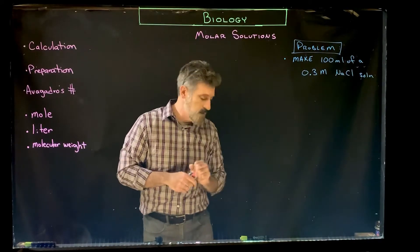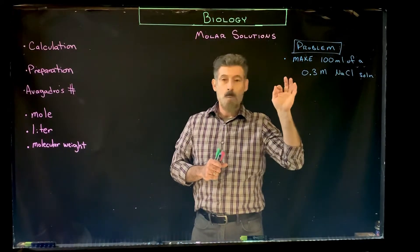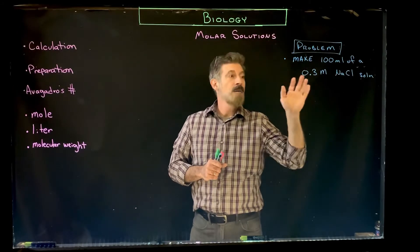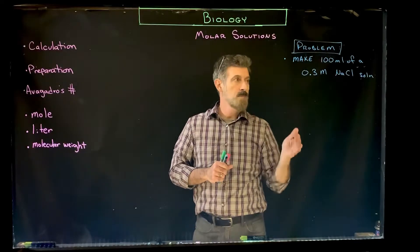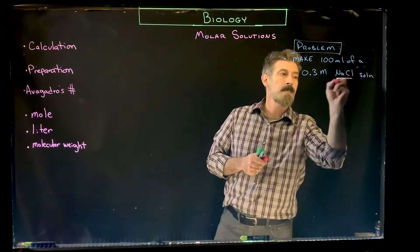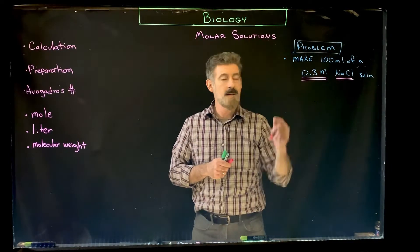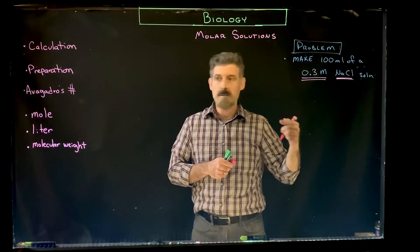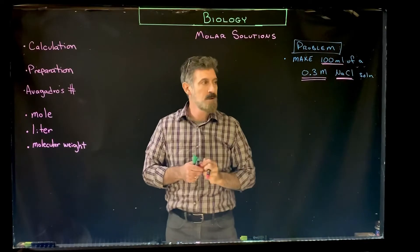So the problem is you're asked to make 100 milliliters of a 0.3 molar sodium chloride solution. You need sodium chloride, this is the concentration that it's supposed to be, 0.3 molar, and then this is the volume. Those are the three pieces of essential information.